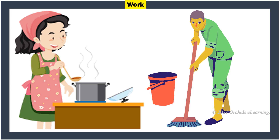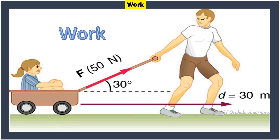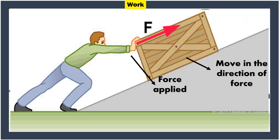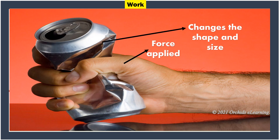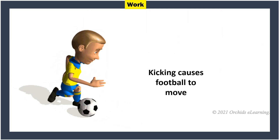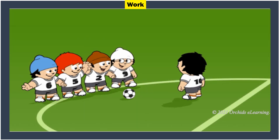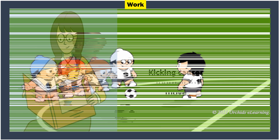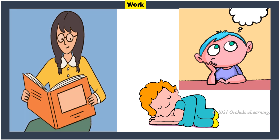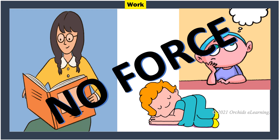Work is used to describe a lot of activities in everyday life. In science, however, the word work has a very specific meaning. Work is said to be done only when the force applied on an object causes it to move through a distance in the direction of the force. Work is also said to be done when the force applied causes a change in the shape or size of the object. When you kick a football, you apply force that causes it to move — this is considered work. Activities such as reading, sleeping, and thinking are not considered work in science, because no force is applied and no object is moved.